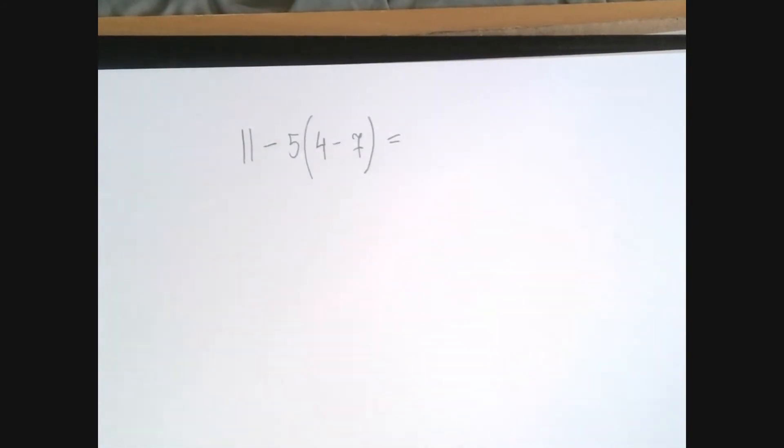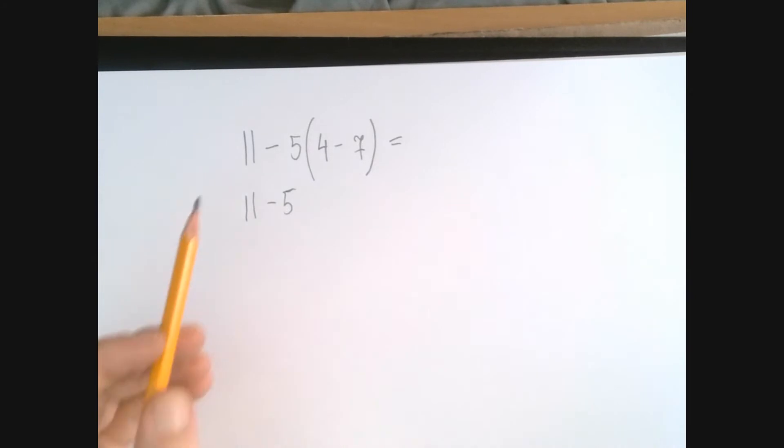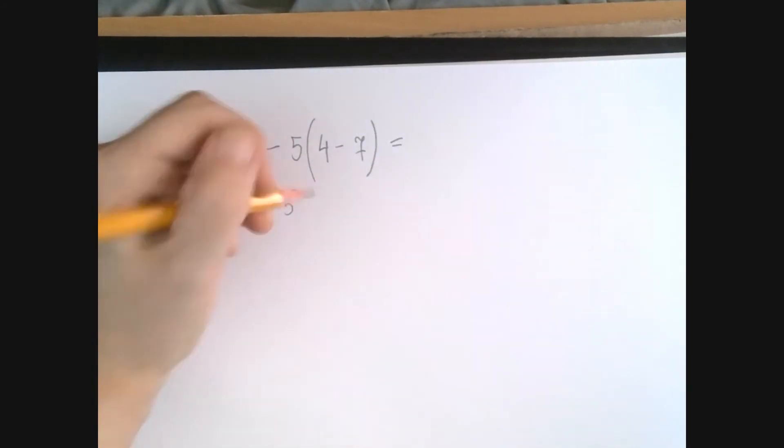We have to start with the parenthesis, so we're going to leave alone 11 minus 5. And by the way, this is not 11 minus 5. This is 11 minus 5 times whatever this is. 4 minus 7, that's negative 3.